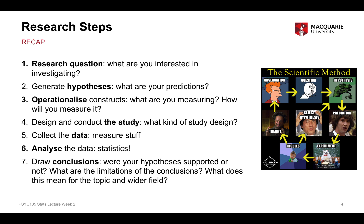Based on your research question, you then make hypotheses, which are predictions about what you think is going to happen — what you think the association between certain things will be. Whereas a research question is quite general and phrased as a question, a hypothesis is a specific prediction or guess. For example, if my research question was about the most effective treatments for depression, my hypothesis might be that psychotherapy is more effective than pharmacological antidepressant drug therapy.